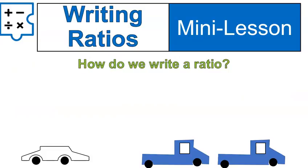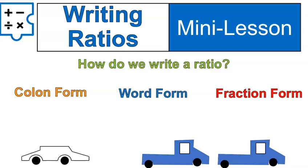Let's talk about how we write a ratio. You can write a ratio in three different ways. Something called colon form, word form, and then a fraction form. Now don't freak out when you see the word fraction.